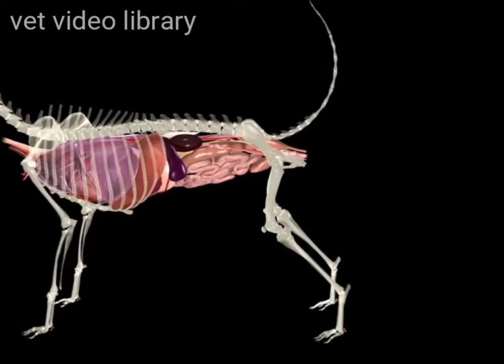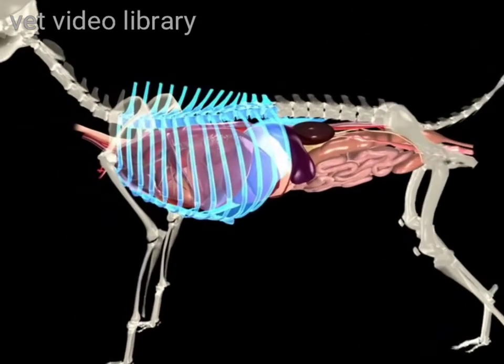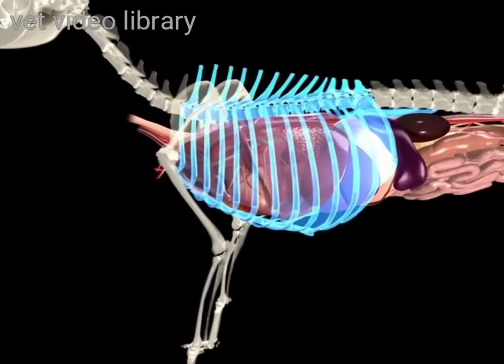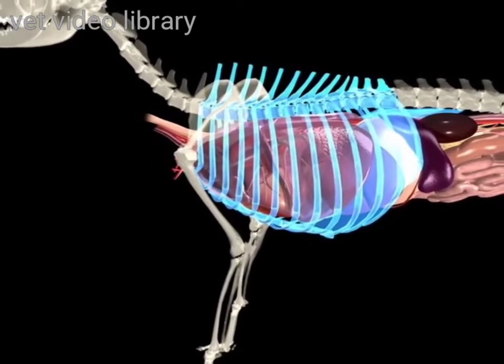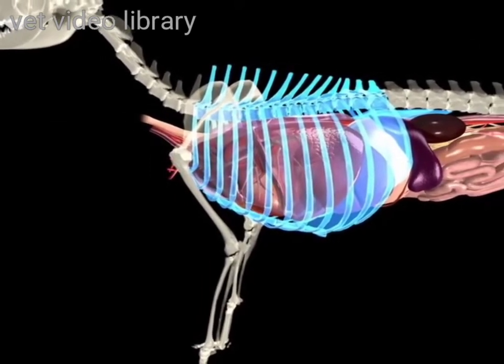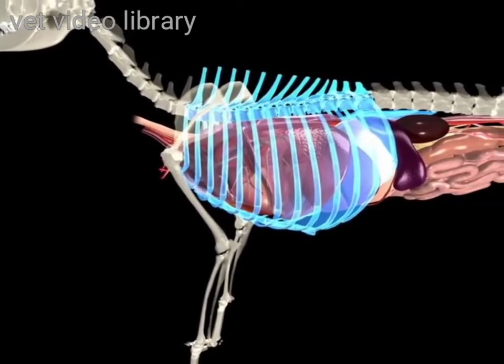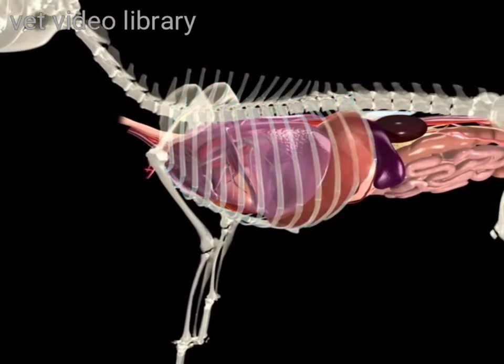The thoracic vertebrae, 13 pairs of ribs, sternum, and diaphragm form the boundaries of the thorax.